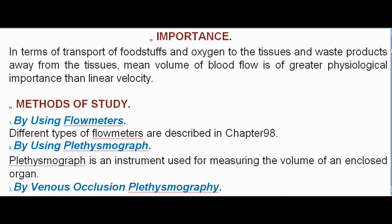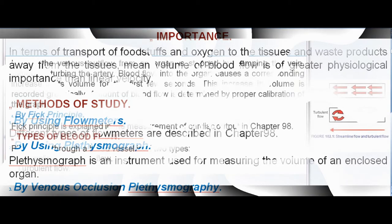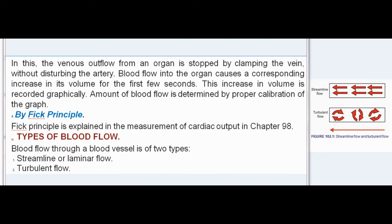Methods of study: By using flow meters — different types of flow meters are described in Chapter 98. By using plethysmograph — a plethysmograph is an instrument used for measuring the volume of an enclosed organ. By venous occlusion plethysmograph, the venous outflow from an organ is stopped by clamping the vein without disturbing the artery. Blood flow into the organ causes a corresponding increase in its volume for the first few seconds, which is recorded graphically. Amount of blood flow is determined by proper calibration of the graph. Also by Fick principle, explained in Chapter 98.